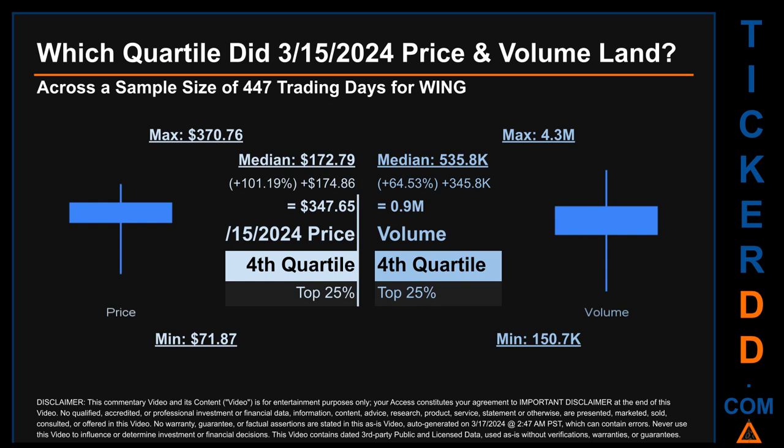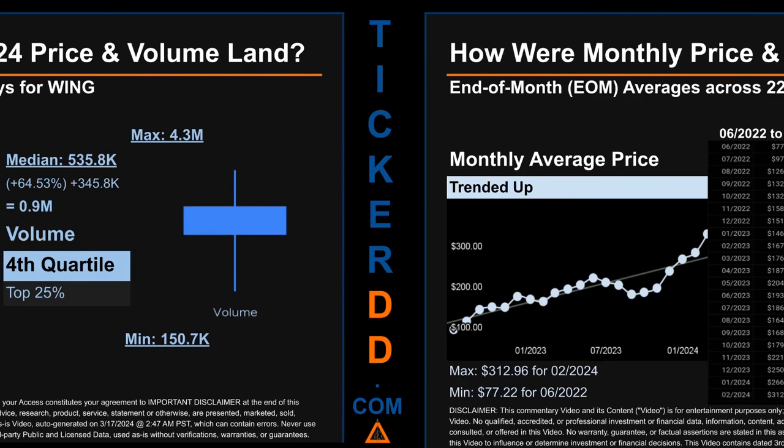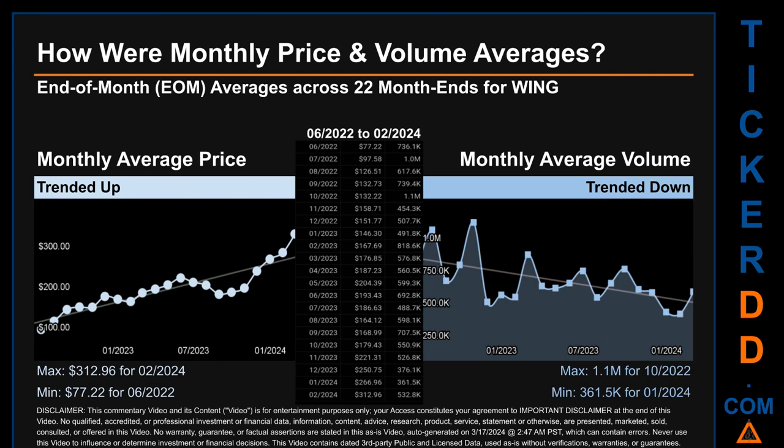Hello, my name is Claire. How were price and volume averages for WING across 447 trading days? There were a total of 22 month-ends, for which monthly averages for daily price and volume were calculated. Overall, monthly price average trended up while monthly volume average trended down. The maximum end-of-month average price was $312.96 for February 2024, while the minimum was $77.22 for June 2022. Looking at volume, October 2022 and January 2024 respectively saw the highest and lowest monthly average volume at 1.1 million and 361,500.